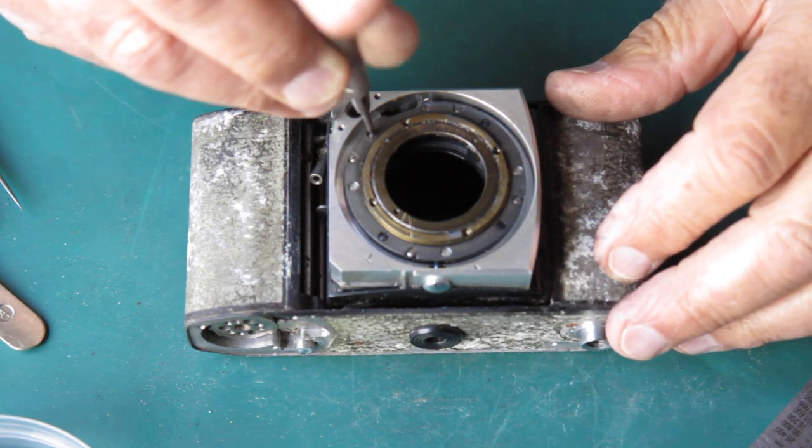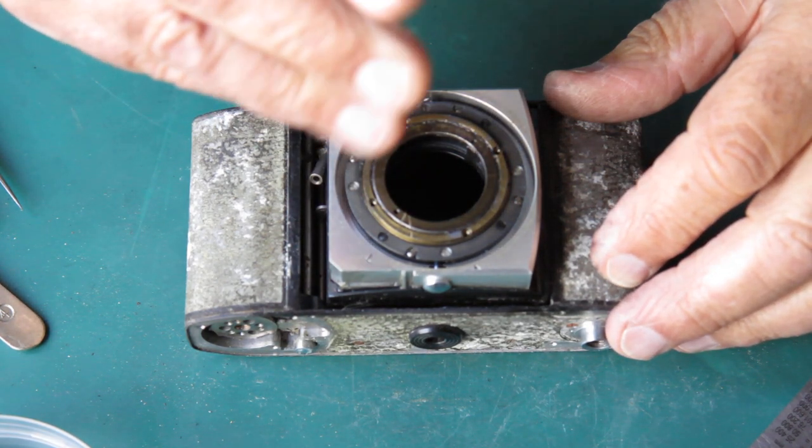All right, four black screws here hold the bellows to the back of the front standard.